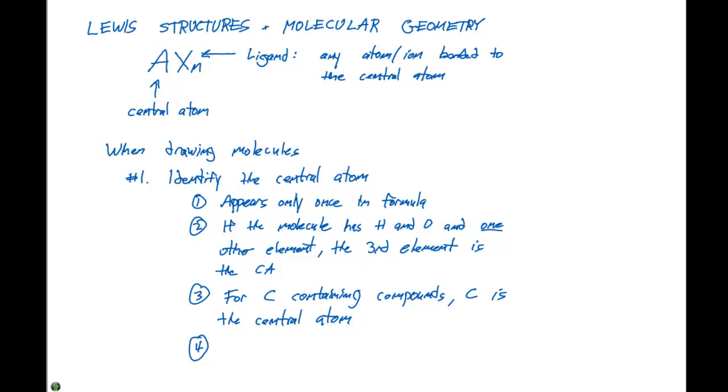Lastly, if you can't identify the central atom from these four steps, the central atom is the least electronegative. This is typically because it has to share its electrons with more than one species. If you have a highly electronegative atom, it's not going to want to share its electrons as much, so it's going to be a ligand rather than a central atom.